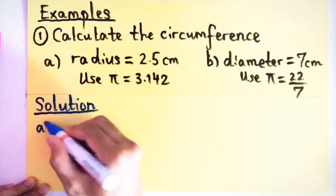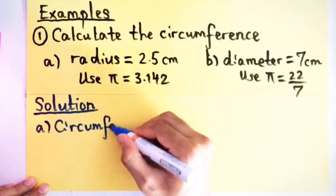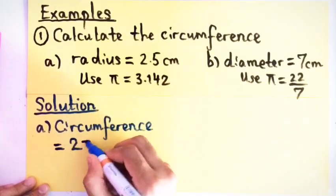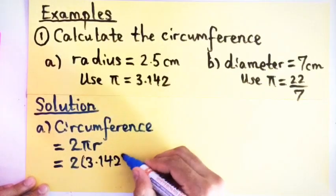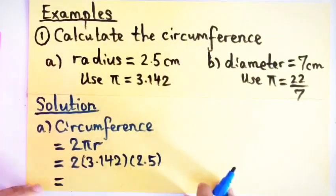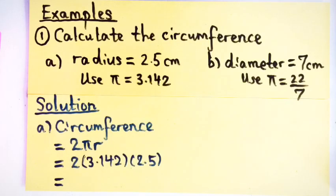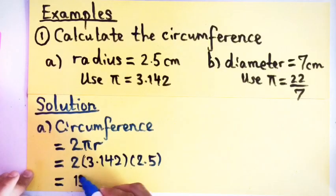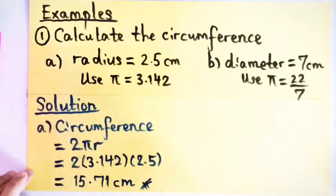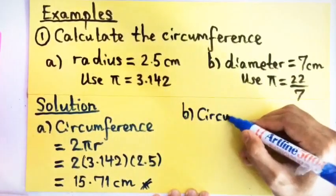When you solve this kind of example or questions, you must use whatever information given to you. If they ask you to use π 3.142, you're going to use that value. Using the formula 2πR, you just substitute in the values. 2 times 3.142 times 2.5, the answer will be 15.71.